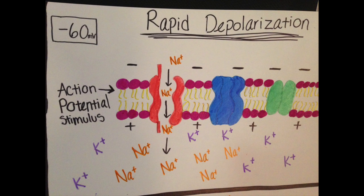During the rapid depolarization stage, the activation gate of the sodium channel opens due to the stimulus hitting the threshold of negative 60 millivolts. This creates an influx of sodium ions in the intracellular fluid, which flips the charge of the inside to positive and the outside to negative.